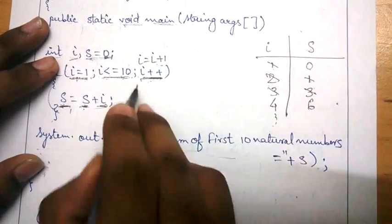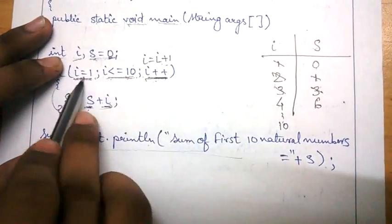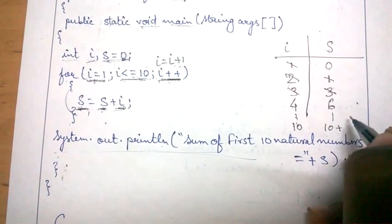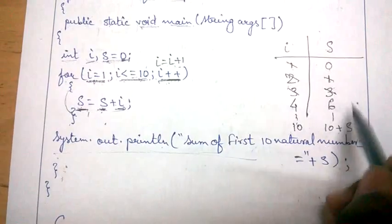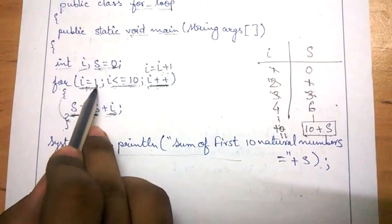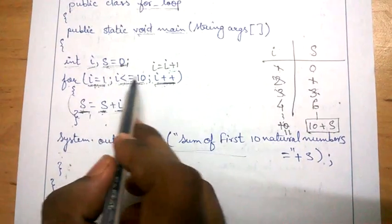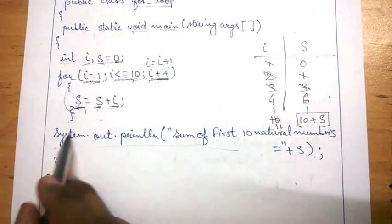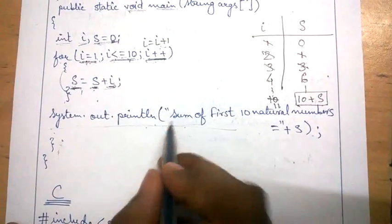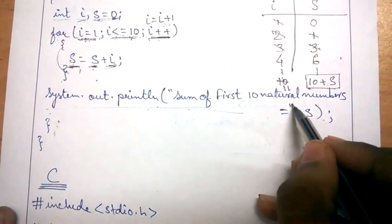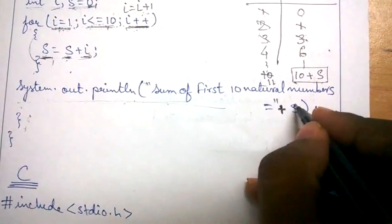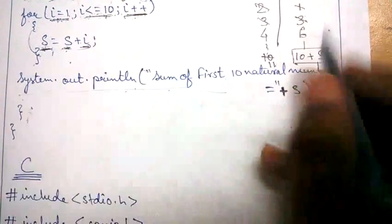The loop continues until i equals 10. 10 is less than or equal to 10 — the equal-to condition works here — so it comes inside once more. After executing with i equal to 10, i increases to 11. Since 11 is not less than or equal to 10, the loop terminates. After this the program comes to system.out.println. println prints the statement we put under double inverted commas, then we put a plus sign — the concatenation sign — and then print s without inverted commas.